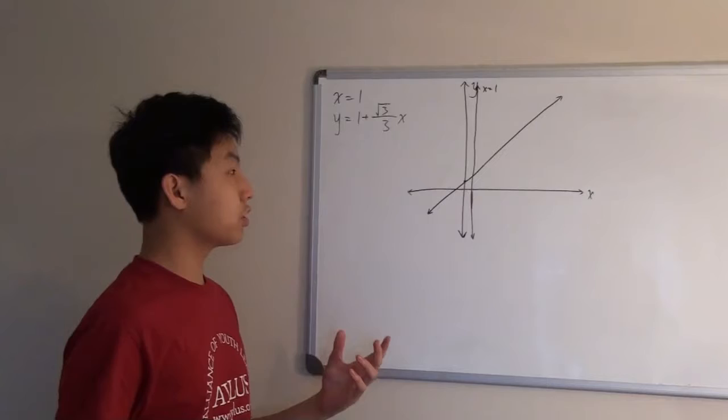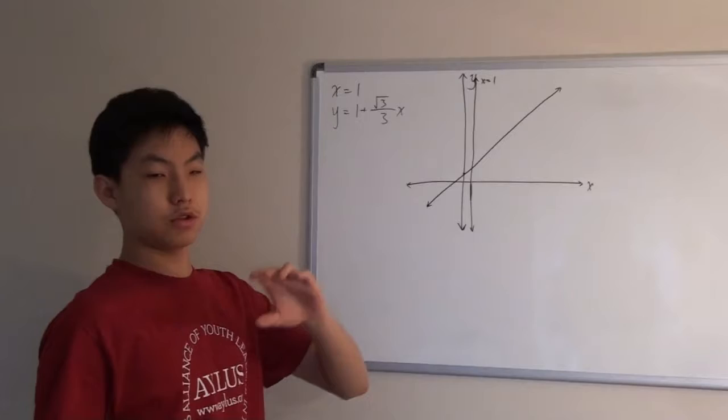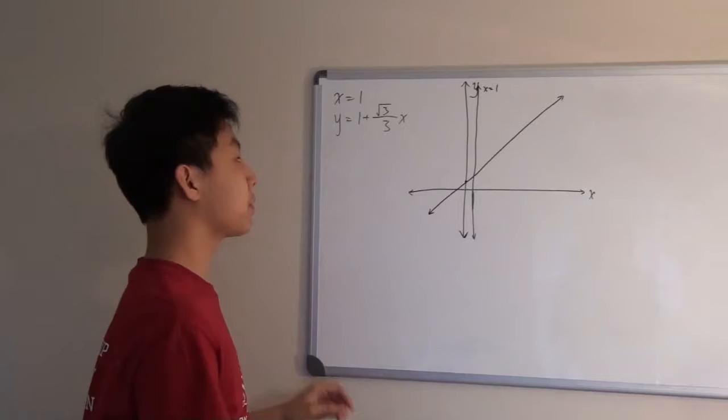Okay, so now we need to try to find the third line in order to pinpoint two vertices. And then we can use that to find the side length and then multiply that by 3 to get the perimeter.